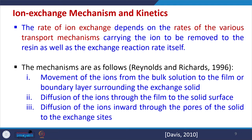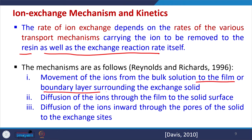The rate of ion exchange depends upon the rates of various transport mechanisms in the bed — how the ion moves toward the resin and how quickly the exchange reaction takes place. There are different steps within the mechanism, and we always want each step to be as fast as possible. As in the adsorption case, the first step is the movement of ions from the bulk solution to the liquid film or boundary layer surrounding the exchange solid.